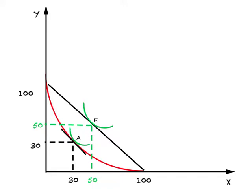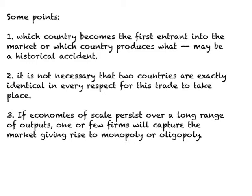Some important points to note when we have increasing returns to scale. Number one: which country becomes the first entrant into the market or which country produces what, the theory cannot explain this. This may simply be a historical accident. Number two: it is not necessary that two countries are exactly identical in every respect for this kind of trade to take place. The third thing you should notice: if economies of scale persist over a long range of output, one or few firms will capture the entire market, giving rise to market conditions such as monopoly or oligopoly.